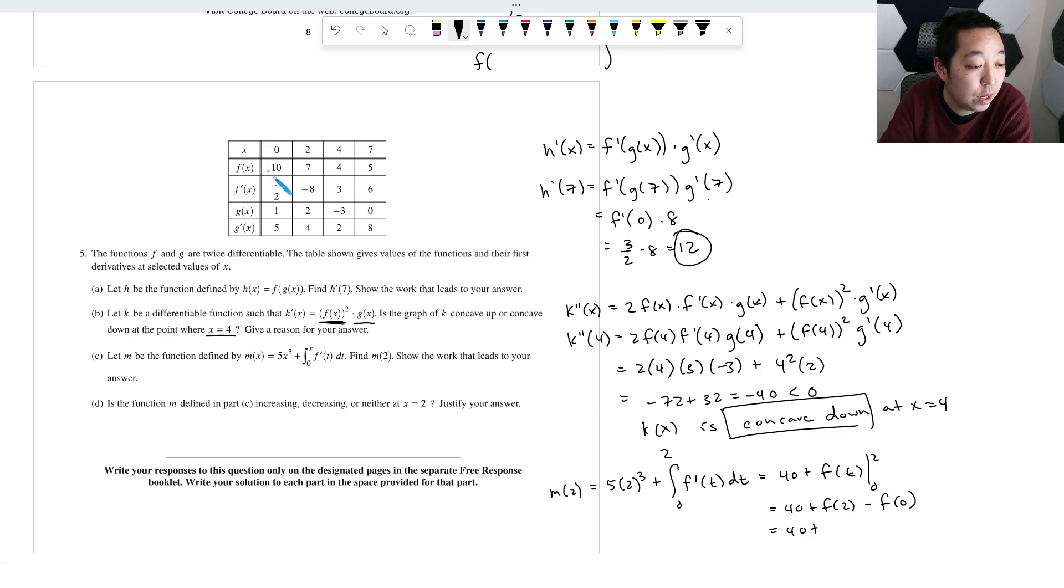40 plus f of 2, f of 2 is 7. f of 0 is 10, right? So that's 40 minus 3. 40 minus 3 is 37, okay?